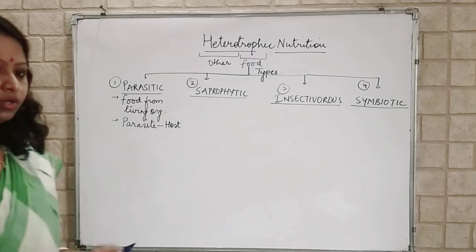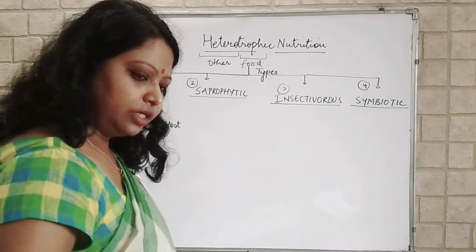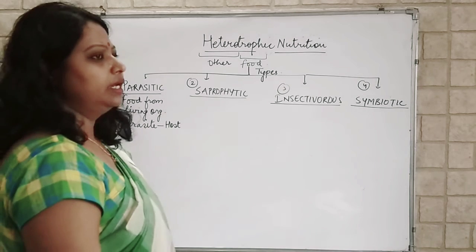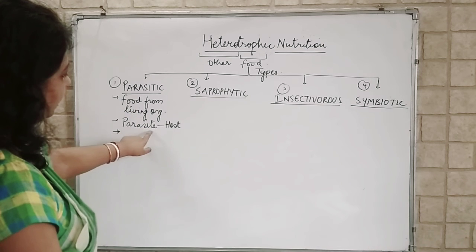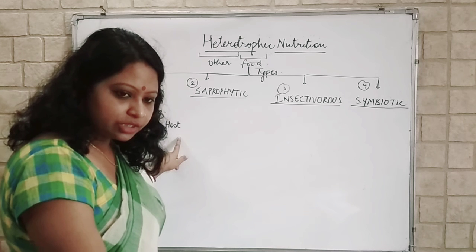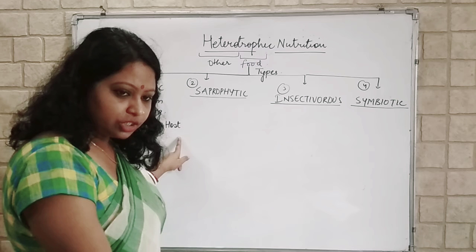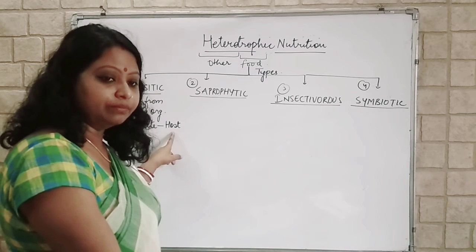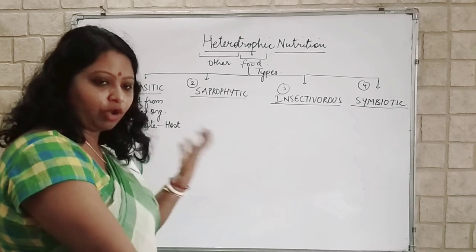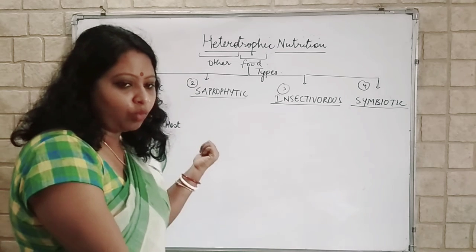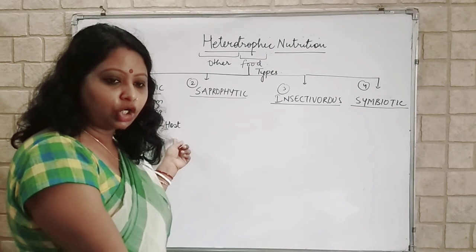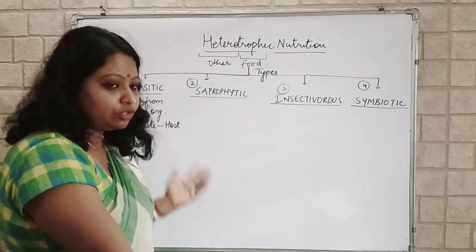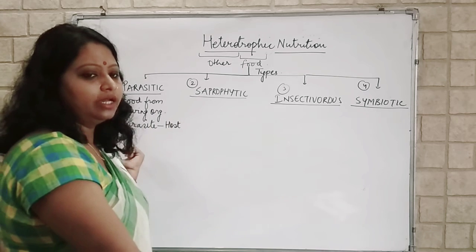This is also known as Parasitism. The Parasite gets benefited from the host, and the host is not getting any benefit. Only the Parasite is benefited. The host may or may not be harmed. When the Parasite draws nutrition from the host, obviously the host gets less. But basically, the Parasite doesn't want to kill the host — if the Parasite kills the host, they will also not get food. So they don't harm to that extent, but yes, they do harm by taking away nutrition from the host.